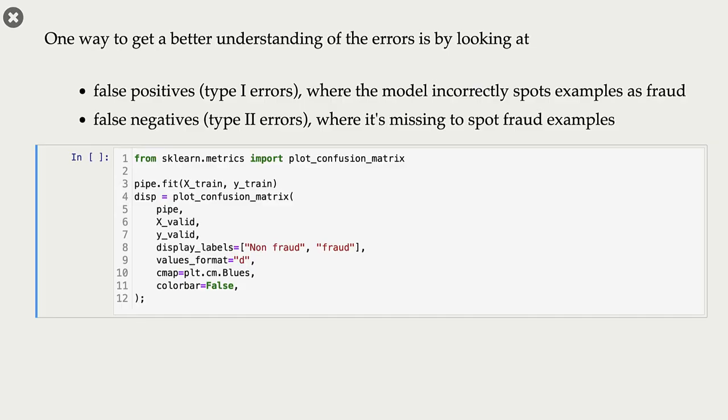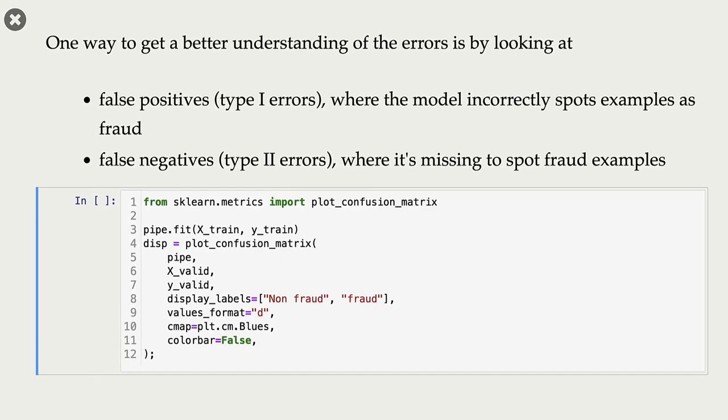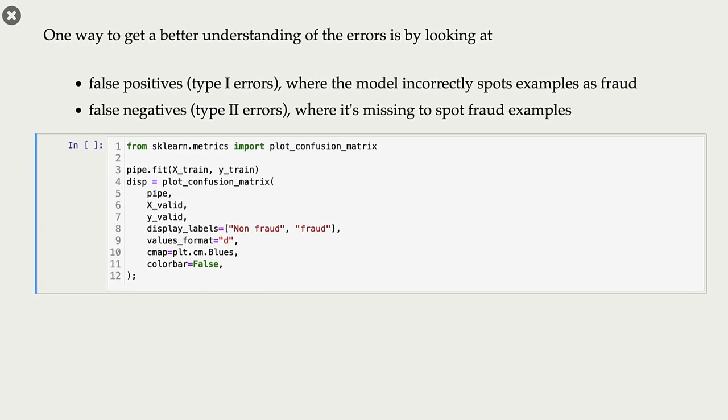A common way to get a better understanding of the errors made by our model is by looking at something called a confusion matrix. A confusion matrix gives us information about true negatives, true positives, and false positives and false negatives.